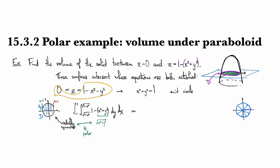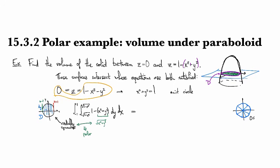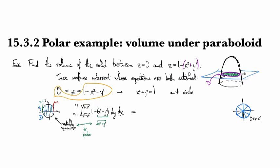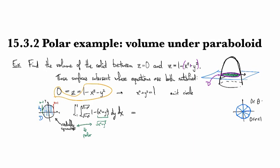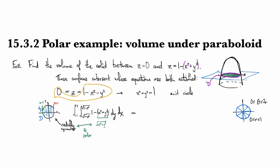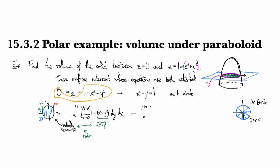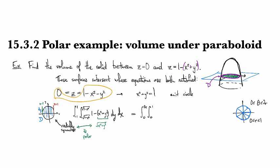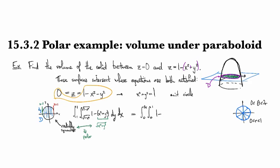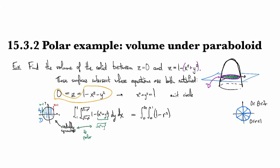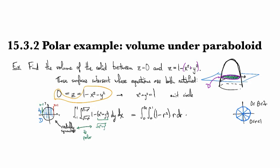Okay, so we have that the radius goes from 0 to 1, and then we're also taking all directions, theta, between 0 and 2 pi to go around the circle once. So we have 0 to 2 pi, 0 to 1, and then our new function is 1 minus r squared, and then we have our new dA, which is r dr d theta.